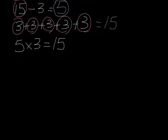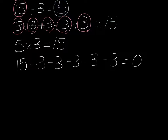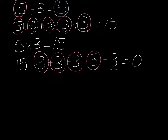And now we're going to do this as a repeated subtraction. So we've got 15 and we're going to take away 3: 15, 12, 9, 6, 3, and another 3 equals 0. So how many times did we do repeated subtraction? We did it 1, 2, 3, 4, 5. So you can see we've got 5 again.